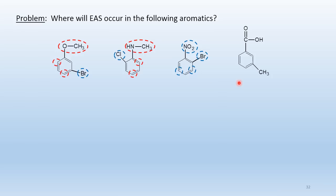(4) Meta-methylbenzoic acid: the methyl group is a weak activator; the carboxylic acid group is a deactivator — ignore the deactivator. The methyl group directs ortho and para to itself. The site between the two meta-substituents is too hindered and will not be substituted.